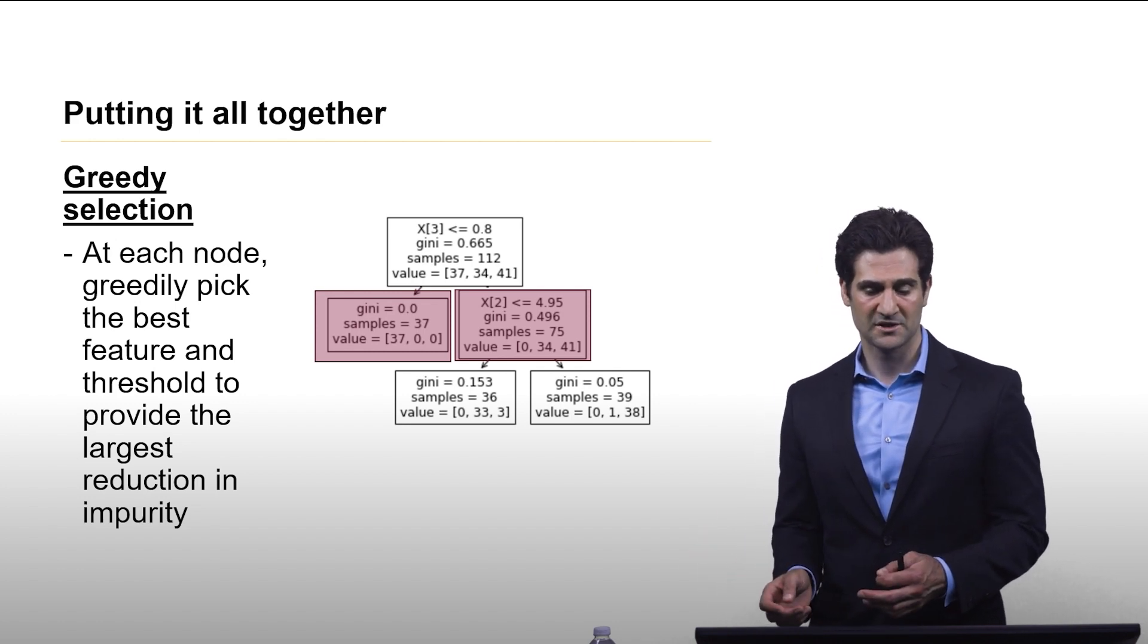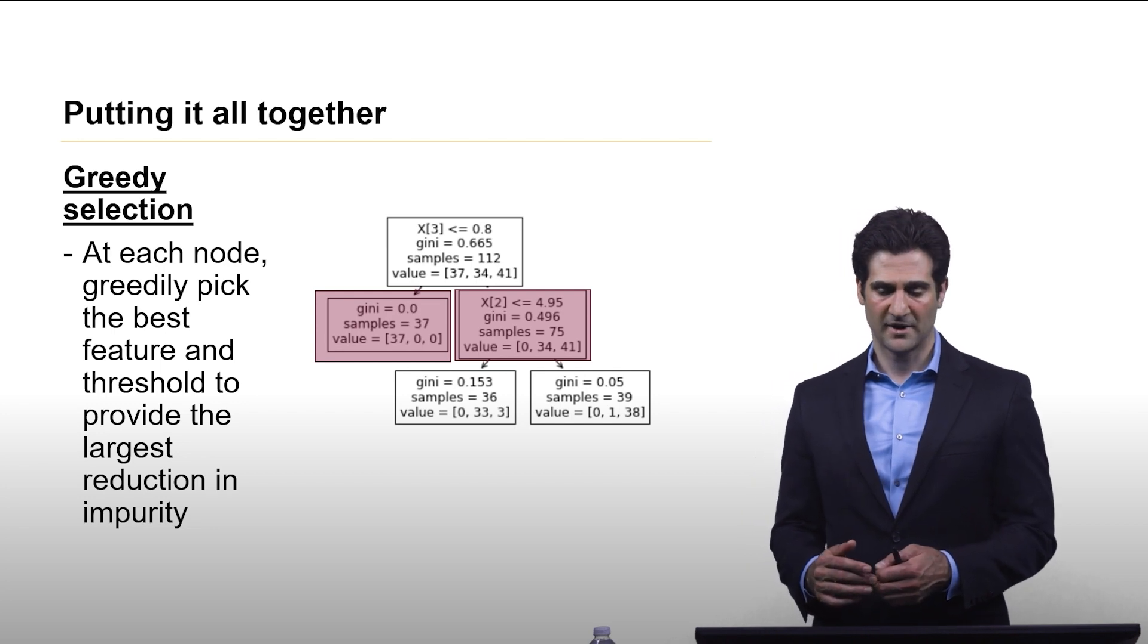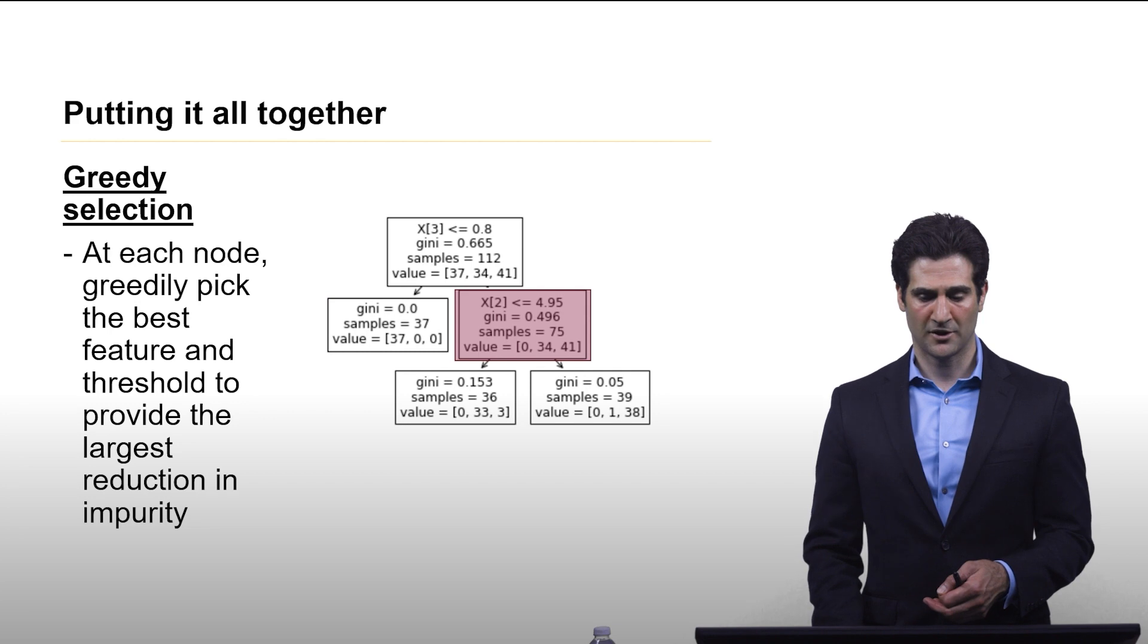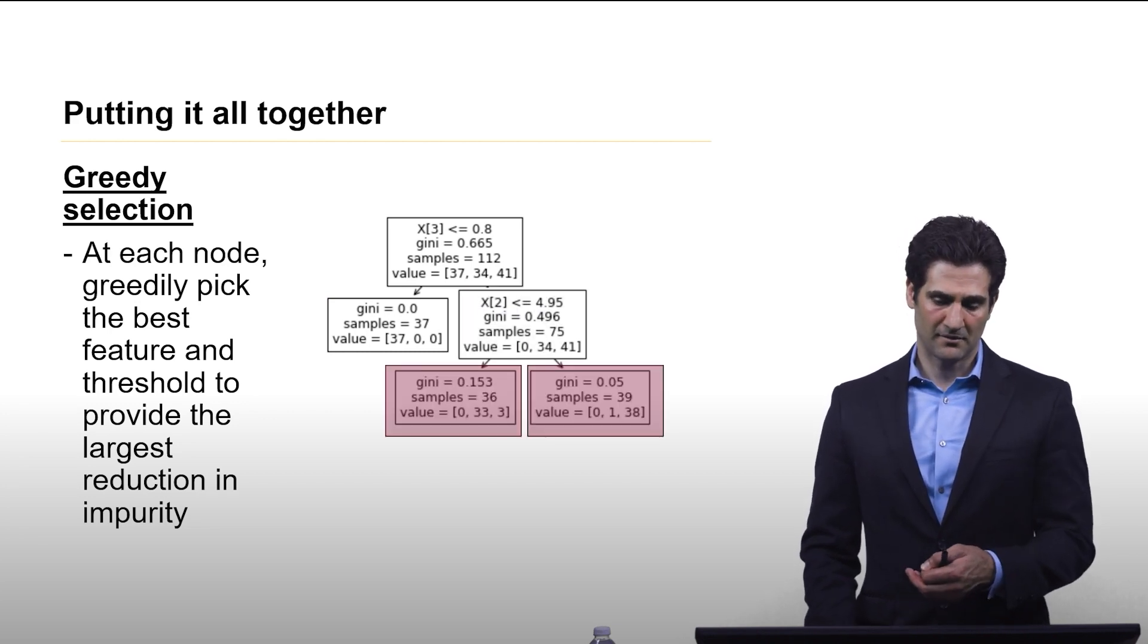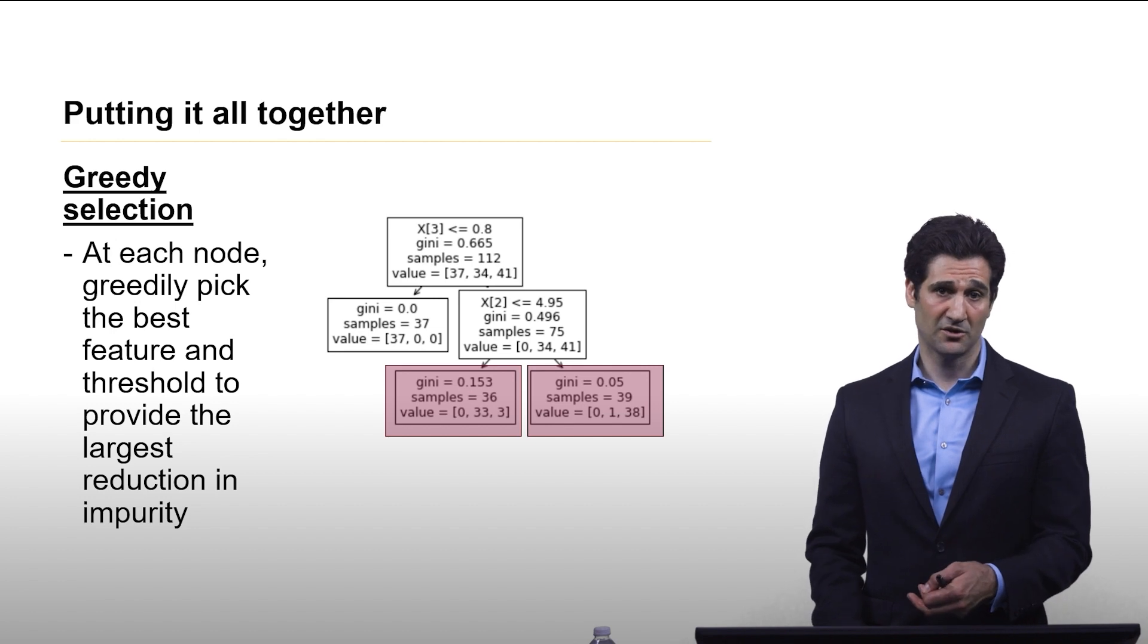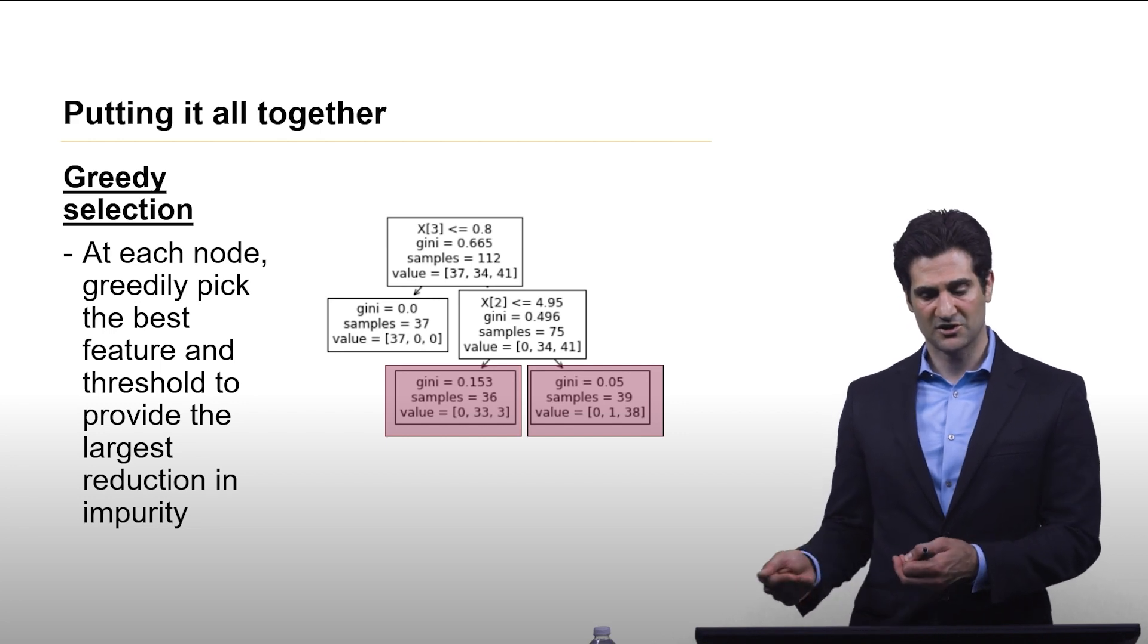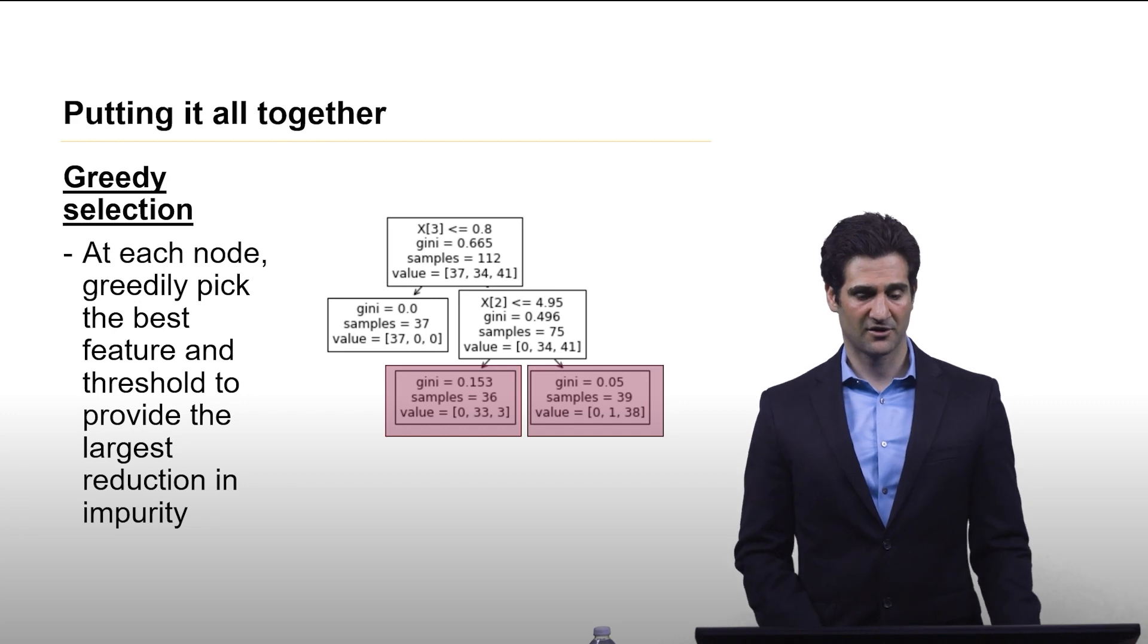And we can see that the algorithm has selected the second feature and a threshold of 4.95, and it splits again. Now, maybe we had specified this to only look for a decision tree of depth 3, and it will terminate there. If we specified it so it would look further, maybe with these nodes it would try to find another split to further reduce impurity going down.